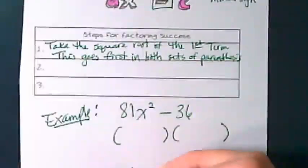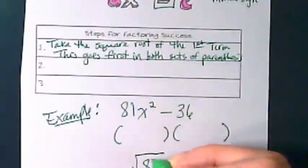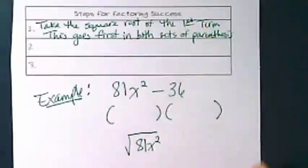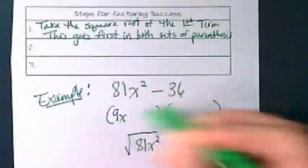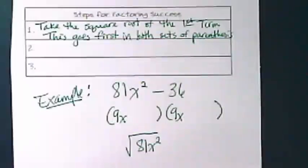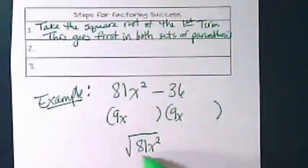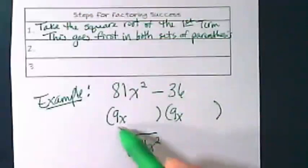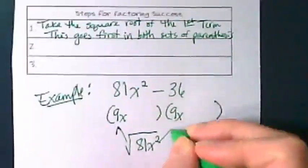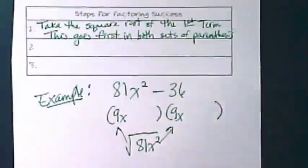The square root of 81x² is 9x. If I multiply 9 times 9, I get 81. If I multiply x times x, I get x². So we put 9x in the first spot in both sets of parentheses.